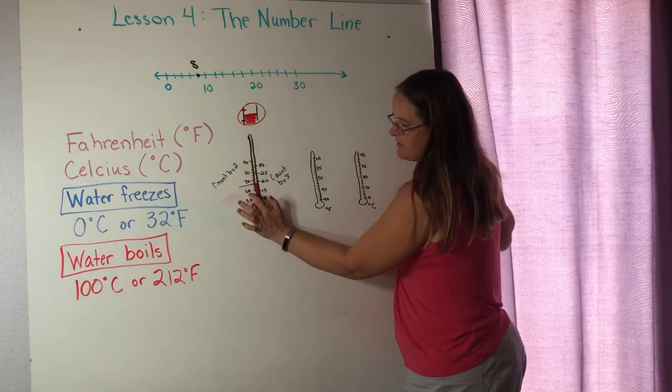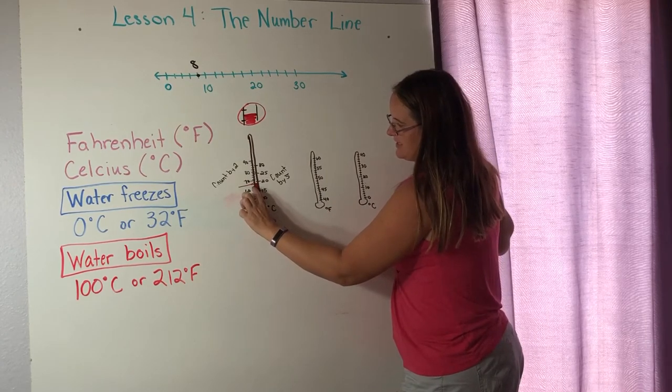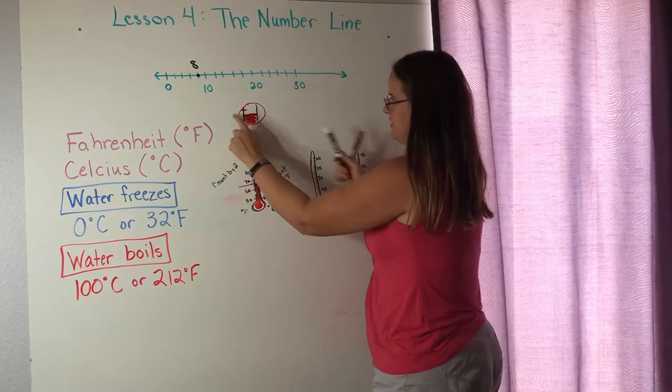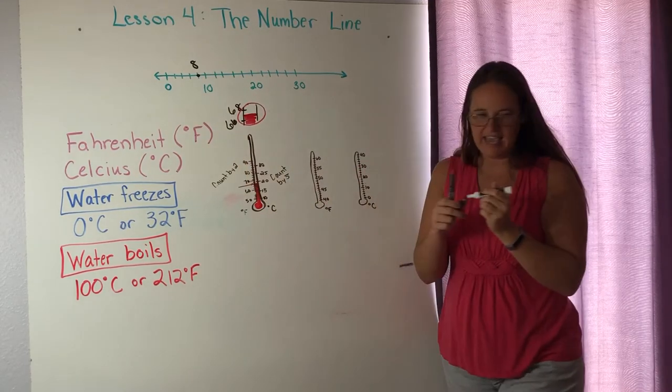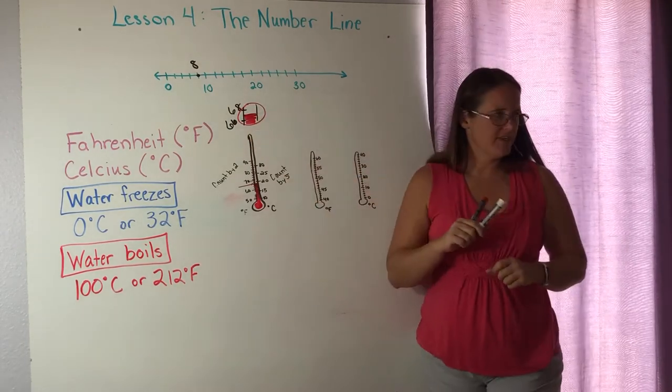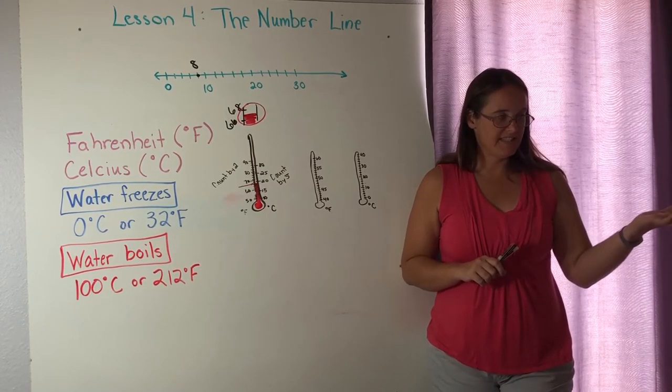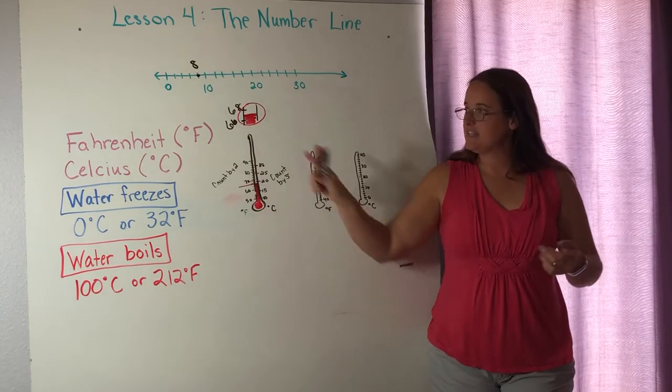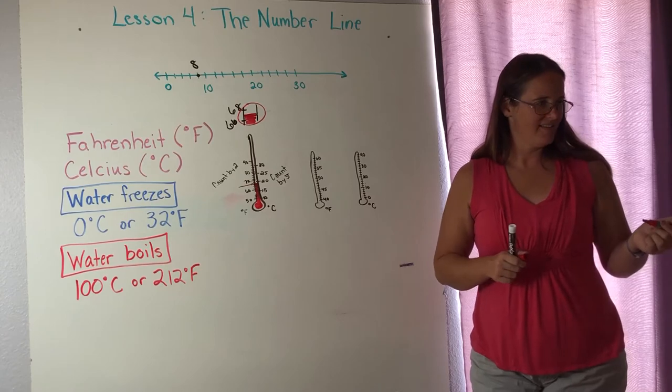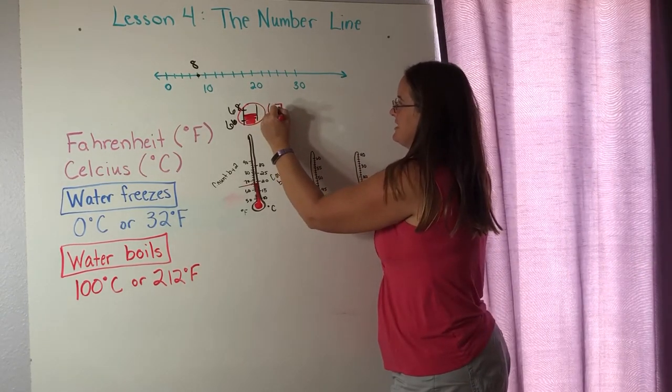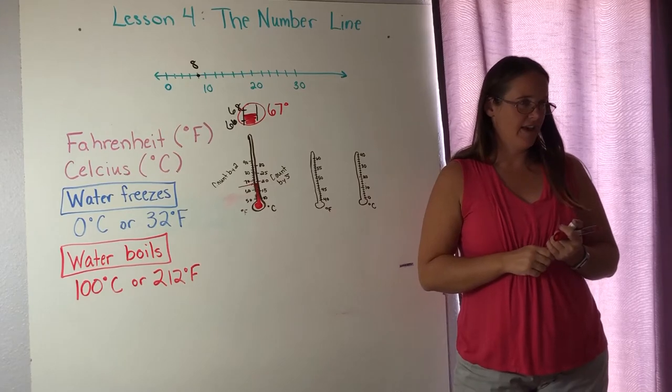So it's somewhere in between 60 and 70, right? So we're going to count. Yep. 60, 62, 64, 66. So we know that this notch here is 66 degrees and this notch here is 68 degrees, but my mercury is halfway in the middle. What do you think that means? It's in the middle between 64. No. It's in between 66 and 68. It's in between 66 and 68. 67. 67. So this would be 67 degrees because it's in between the two notches and we're counting by twos. Okay.